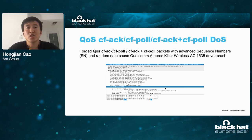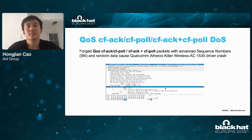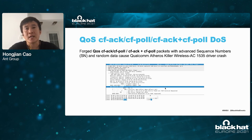The QoS CF-ACK driver crash DOS was discovered in Qualcomm Killer AC5035 card in AP mode on Windows systems. A forged QoS CF-ACK packet with an advanced sequence number and random data will cause its driver to crash.